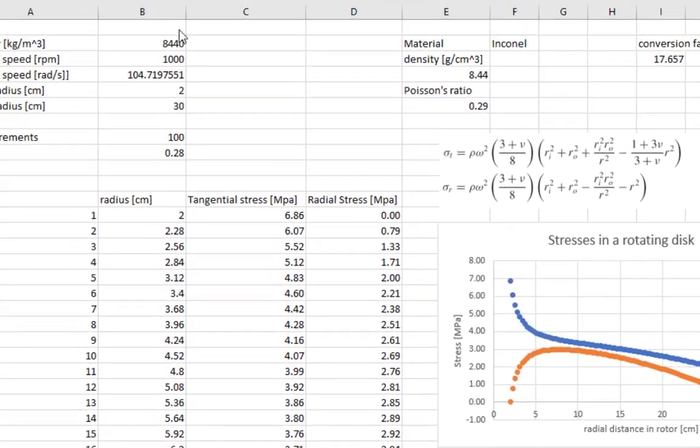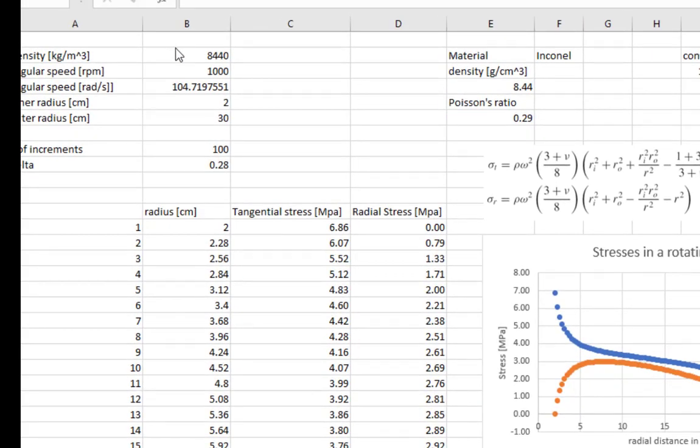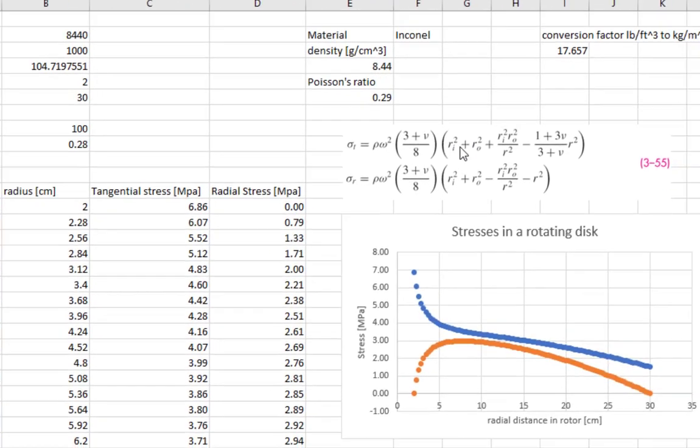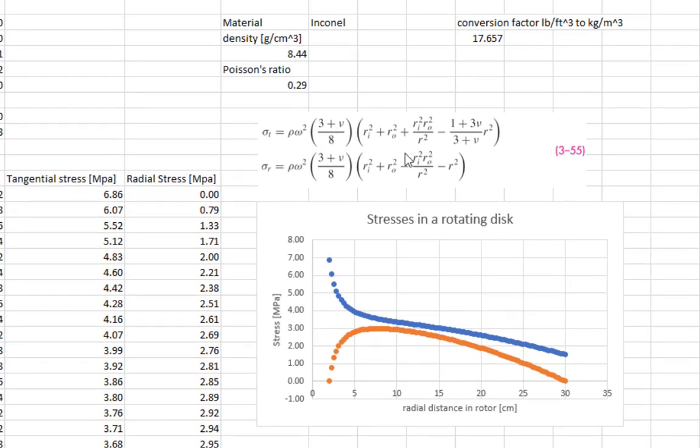So in this case, I have my density in kilograms per cubic meter. I initially input the angular speed in rpm, but I convert it to radians per second. I have inner and outer radius in centimeters. But you have to convert all of these distances to meters when you do the calculations in equations 355.